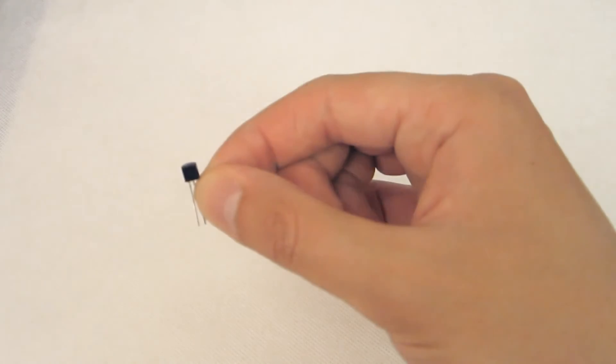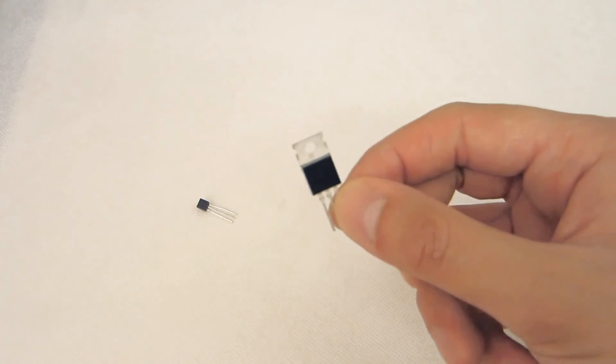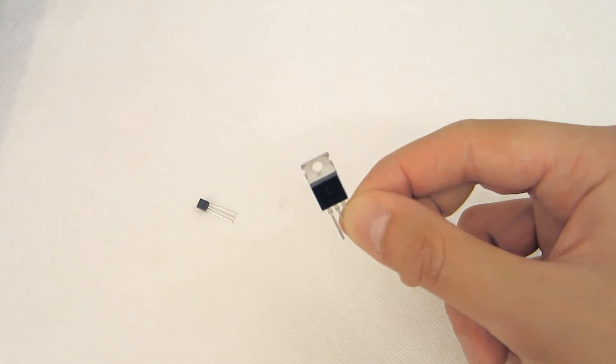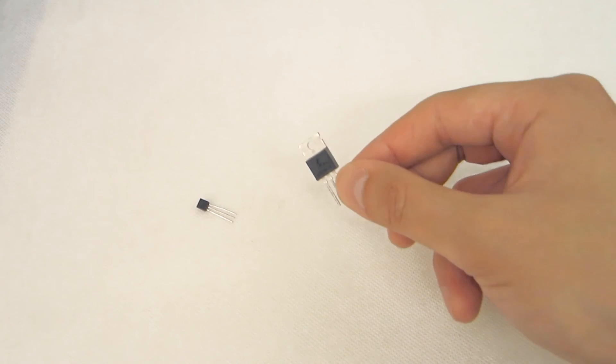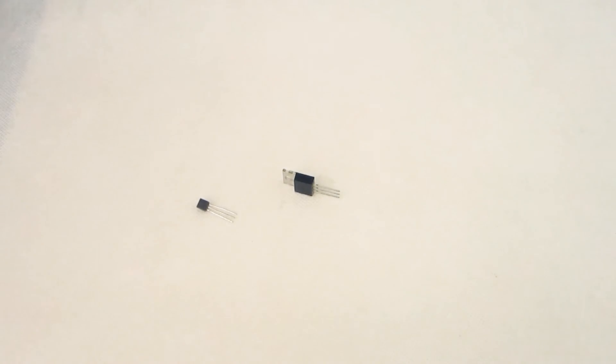Smaller transistors like these, which normally handle less power, are normally called signal transistors. Whereas more powerful ones like these with a heat sink to dissipate the extra heat are normally known as power transistors.